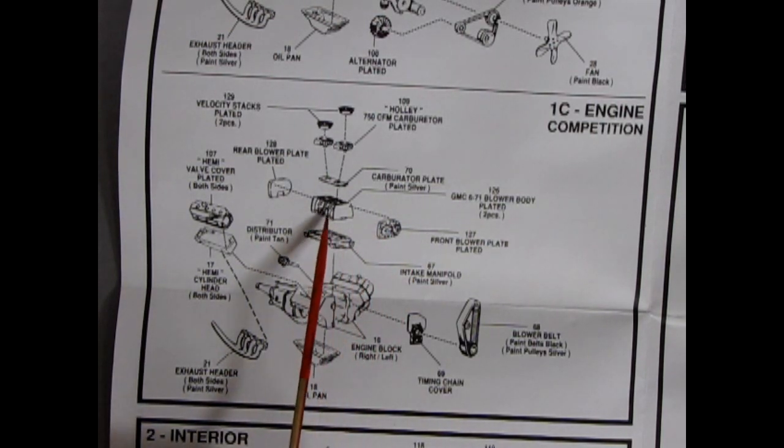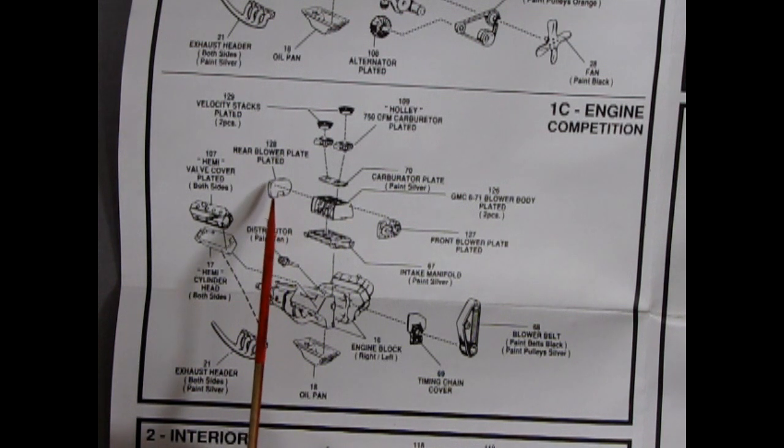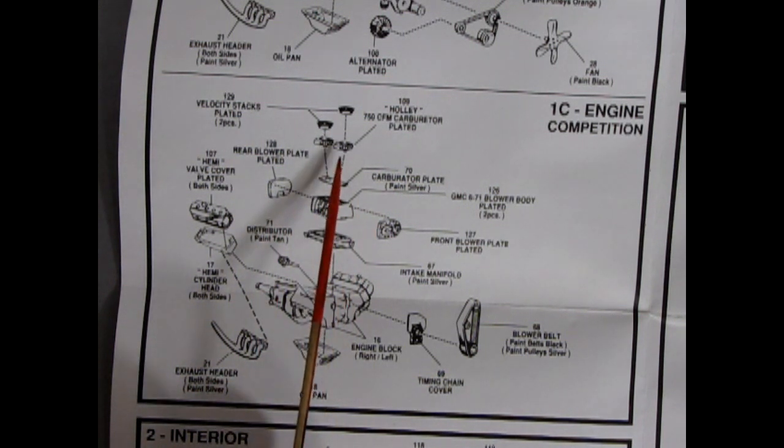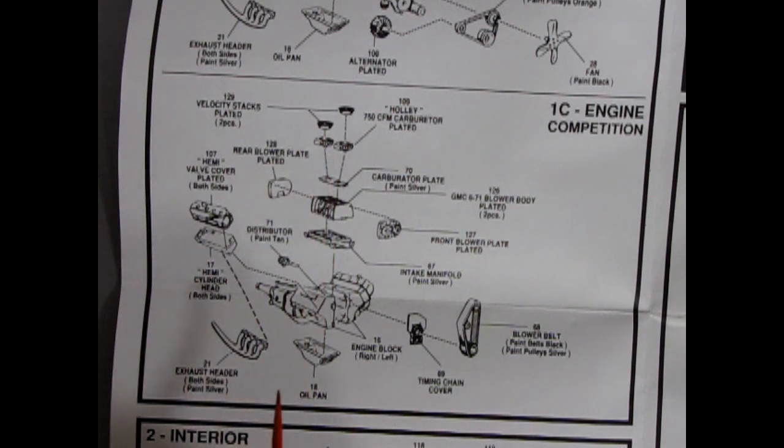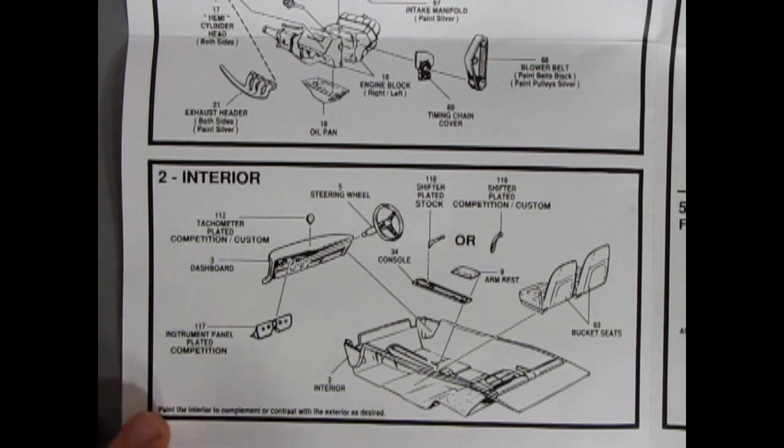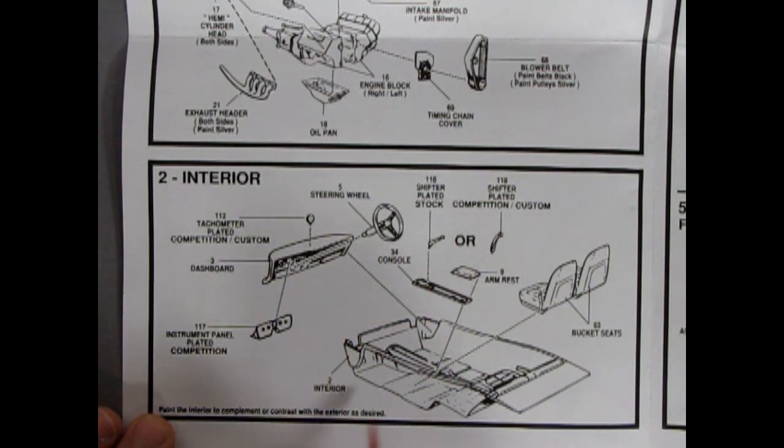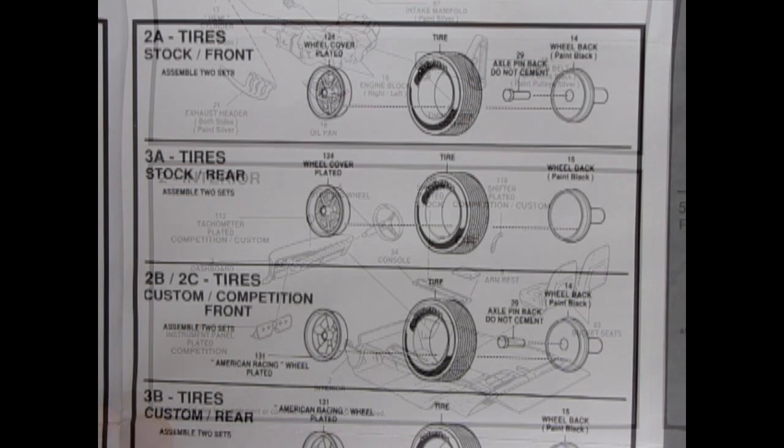You've got a front cover, the center section, the rear blower plate cover, carburetor plate, your dual Holleys and then your velocity stacks as well. Our interior has a few options to it, so you have to look and really know what's going on with the Daytona. Here we have our dashboard, tachometer, the chrome plated instrument panel that blanks out the stock Chrysler instrument panel. We've got our steering wheel, a plated shifter, a stock version or a competition one. There's an armrest here with a console piece that goes onto the molded in console on the floor, and then you've got your two bucket seats.